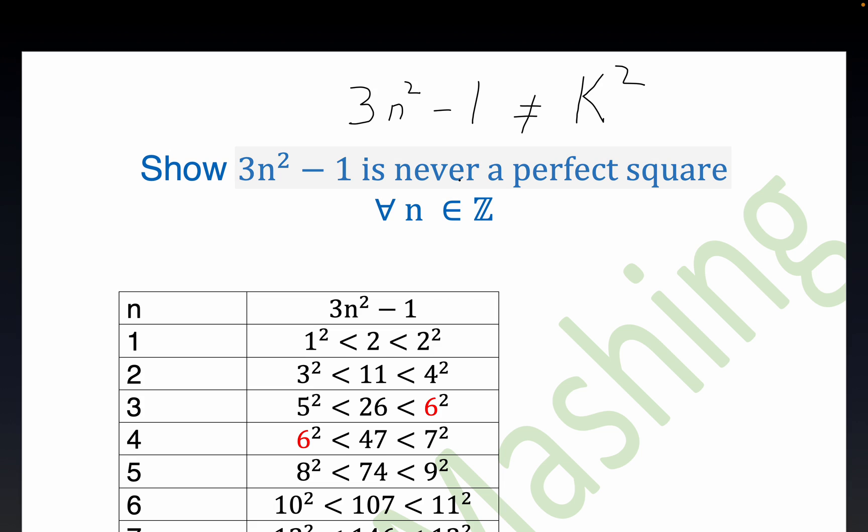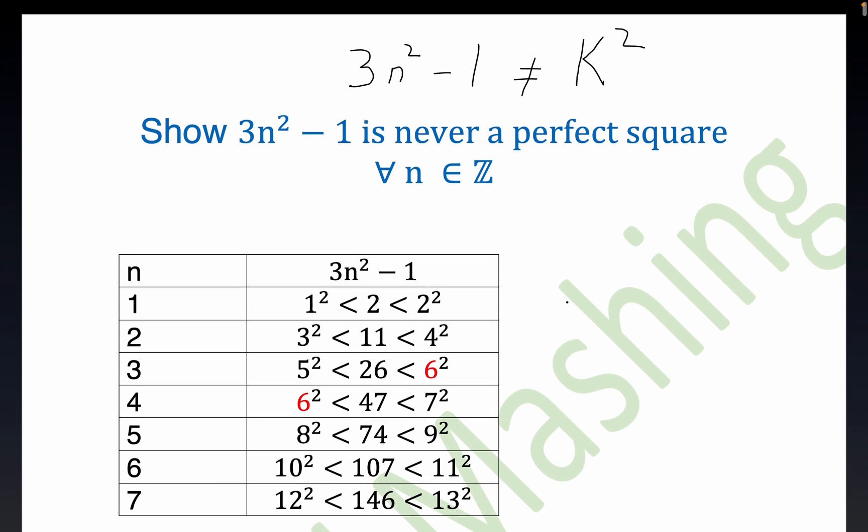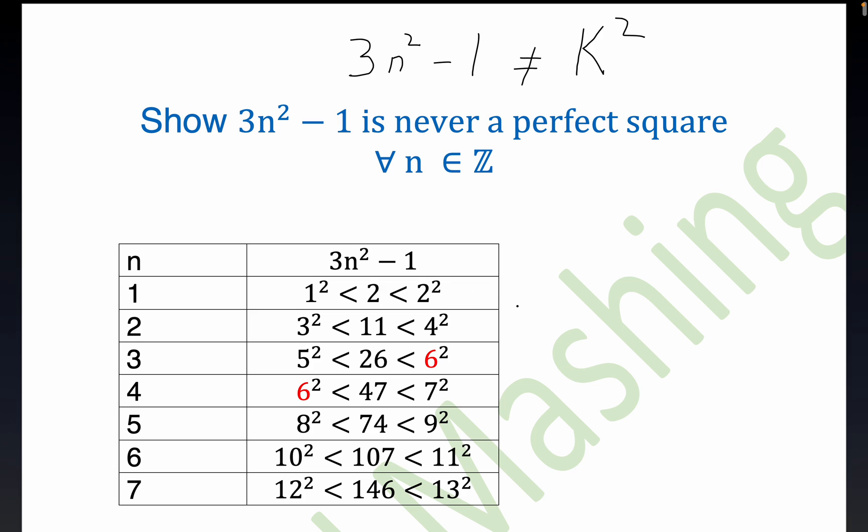This is just a more wordy way of saying it right here. This means for all integers. Now it's clear it doesn't work for n equals 0. n equals 0 would yield negative 1 and negative 1 is not equal to any integer squared. So what I've done is just gone through a little bit of discovery here for various values of n and I got this table here.